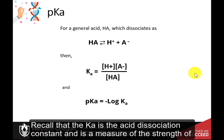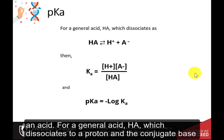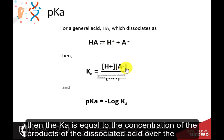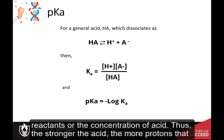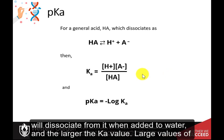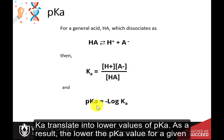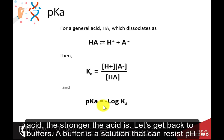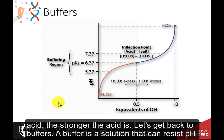Recall that the Ka is the acid dissociation constant and is a measure of the strength of an acid. For a general acid, HA, which dissociates to a proton and the conjugate base, the Ka is equal to the concentration of the products of the dissociated acid over the reactants, or the concentration of acid. Thus, the stronger the acid, the more protons that will dissociate from it when added to water, and the larger the Ka value. Large values of Ka translate into lower values of pKa. As a result, the lower the pKa value for a given acid, the stronger the acid is.